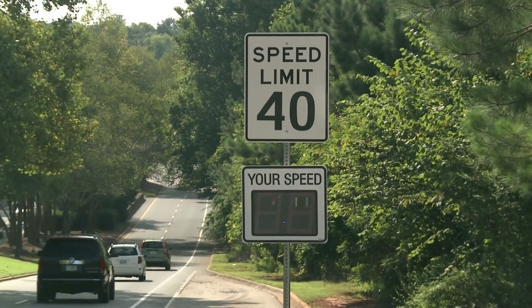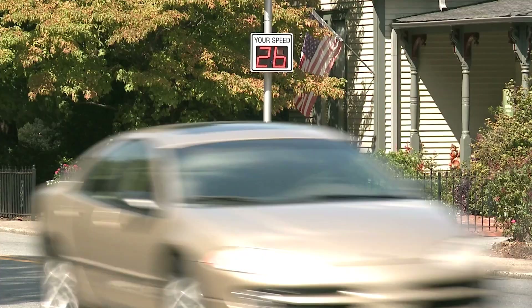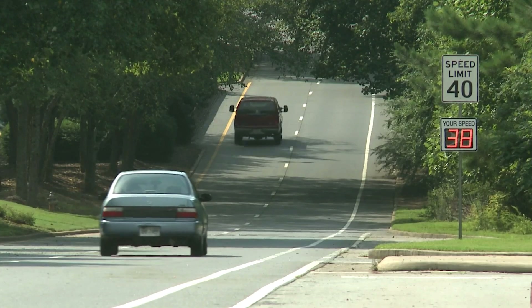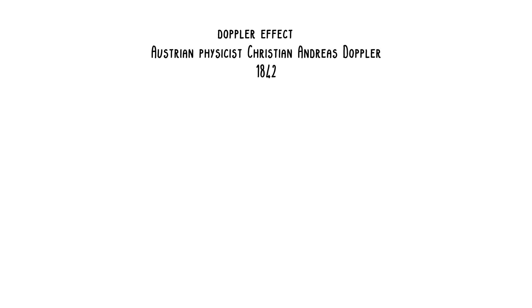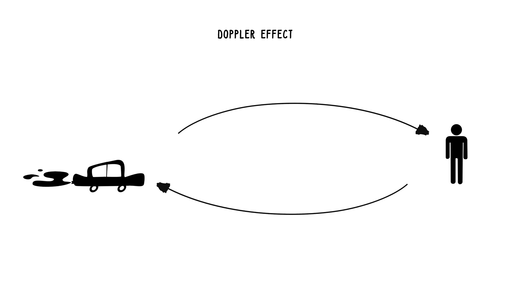You have seen a lot of radar speed signs on the roads while driving and you have to control your speed immediately. But have you ever wondered how it works? It works on the phenomena of science that we call the Doppler effect, named after Austrian physicist Christian Andreas Doppler, who proposed it in 1842. The Doppler effect is the difference between the frequency of the transmitted and returned pulse, and varies with relative motion of the object.